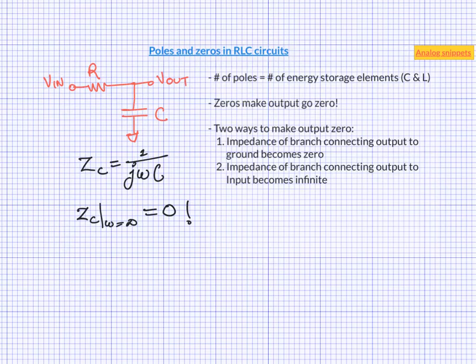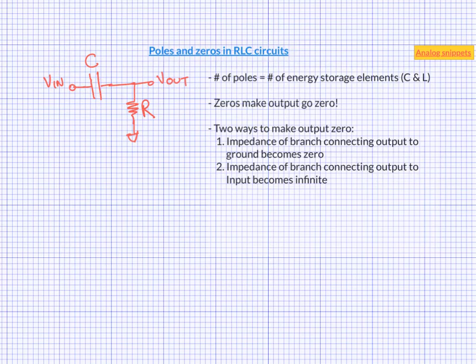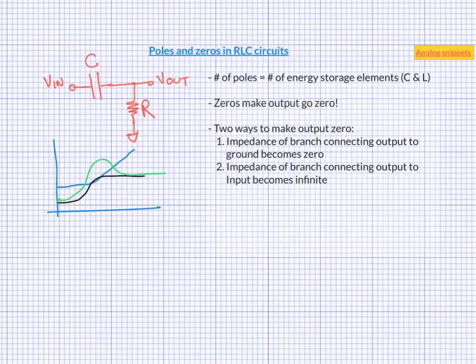I should mention here that the frequencies we are talking about are complex frequencies, and that means you are very unlikely to see the output actually go to zero in a simulation or on an oscilloscope. Now things become much more interesting if we swap the position of R's and C's. In interviews, I often ask people to draw the frequency response of this circuit and I usually get very weird responses — people draw all kinds of things, but very few get it right. But if we know how to find a pole and zero by inspection, we can easily solve this circuit.